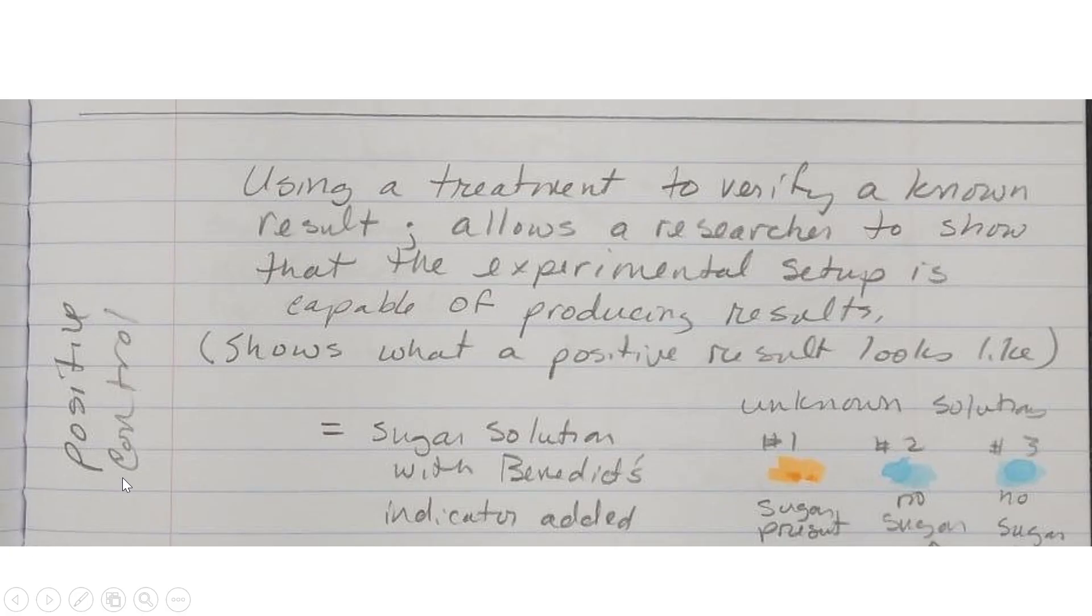Positive control. Using a treatment to verify a known result, this allows a researcher to show that the experimental setup is capable of producing results. Essentially, a positive control shows what a positive result looks like. So for example, Benedict's indicator will change colors when sugar is present. That's what it does. It indicates that there is sugar present.